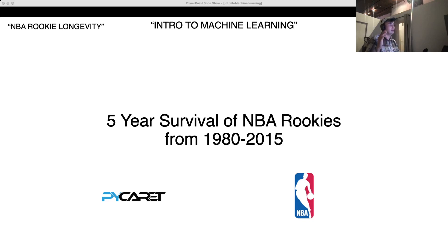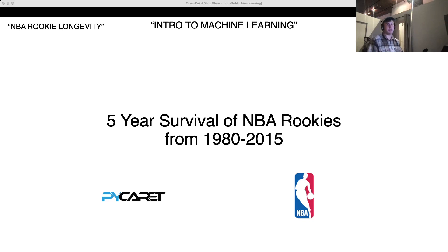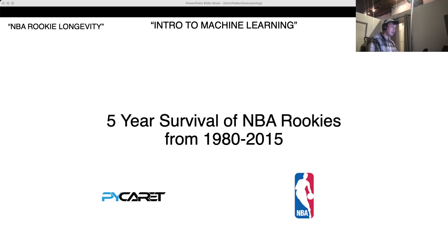So what do I mean by that? The data set is a list of NBA rookies' first-year stats, and then we're trying to determine if that NBA player is still in the league after five years, just based on their first-year stats. So we're going to be using a library called PyCaret. Today's video is just kind of an introduction, but in the future we'll use PyCaret to train some models.